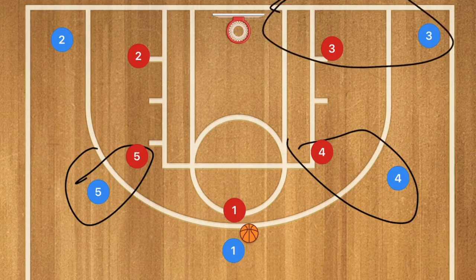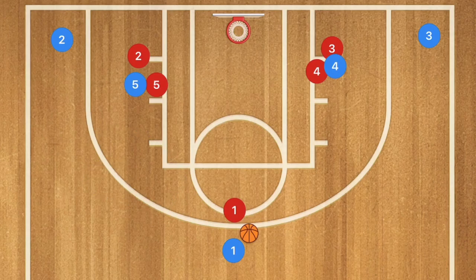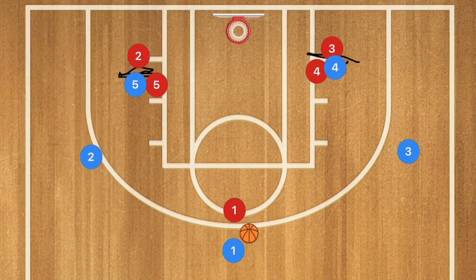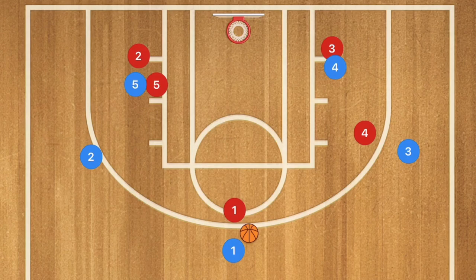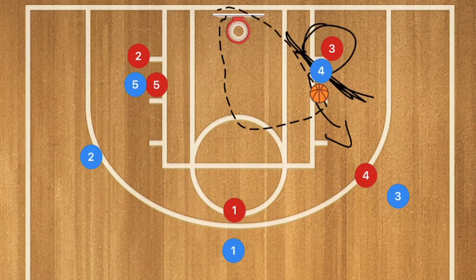In our fifth and final play, our post players — the bigger players — are up top instead of going down low. We want them here because their defenders, if they're bigger players, are not used to playing on the perimeter, so you can take advantage of that. If you can get a really good screen and seal — meaning after players three and two pop by, player five seals his man so his defender has to go out and switch — you're looking for player three to get the ball and pass it into player four, who has sealed his man and has all that court to operate to get that layup.